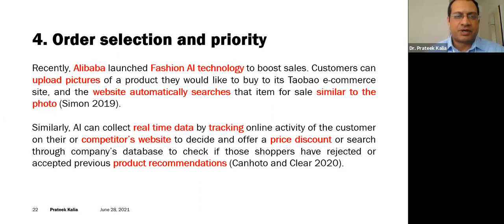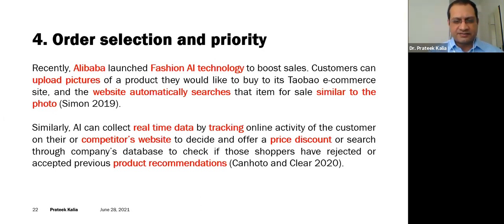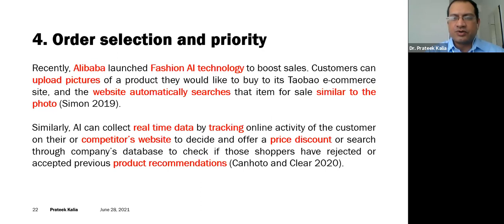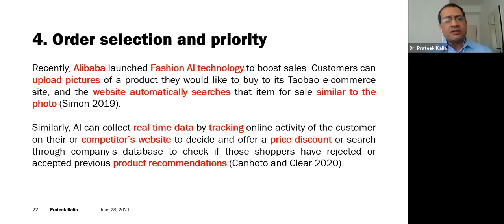Another very interesting concept is fashion AI technology by Alibaba, related to order selection and priority. If I go to a mall in a country where people don't speak English, I may not be able to identify a product by its specific name. I can take out my phone and use Google Translate — which is also AI-powered — or I can simply click a picture and upload it. Alibaba's fashion AI technology lets a customer upload a picture of a product and the e-commerce website will automatically search for a similar item. Additionally, real-time data can be tracked on this basis.